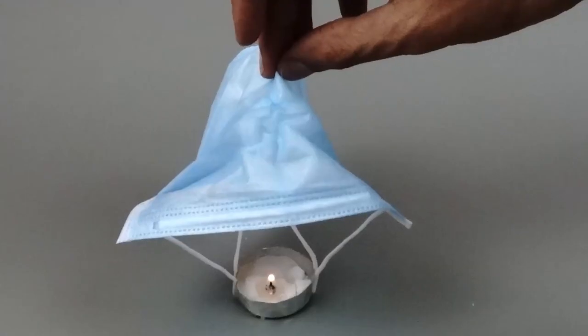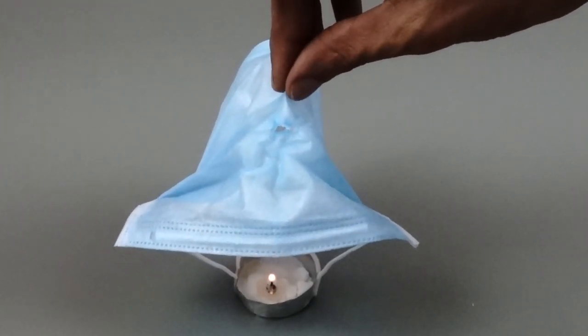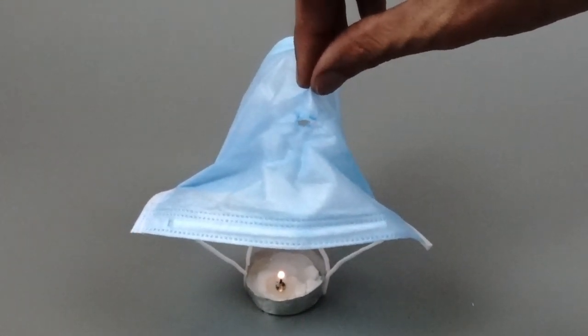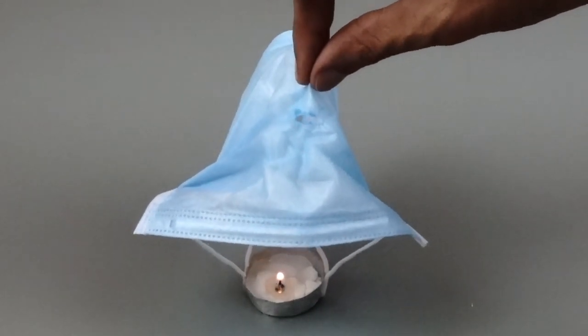In another attempt to float the candle we reduce wax to make the candle lighter. Lightening the total mass will help in the lifting of assembly earlier. However, it also didn't work and we failed.